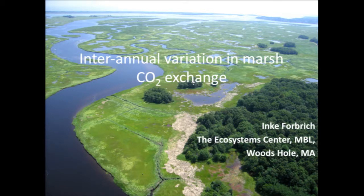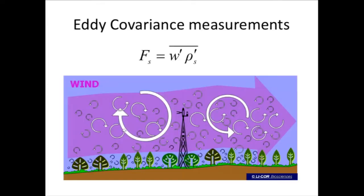It's a beautiful site — a typical New England salt marsh. That means it's a mix of Spartina patens and Spartina alterniflora, and it's regularly or fully inundated only during the spring tides. What I'm interested in is the atmospheric CO2 exchange, and the method I'm using is the eddy covariance technique.